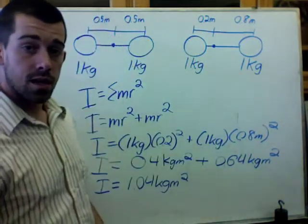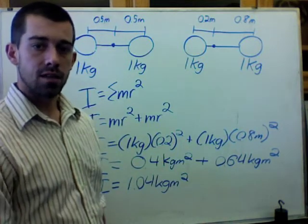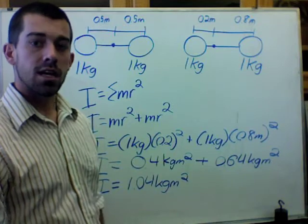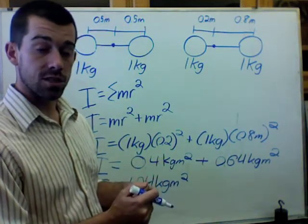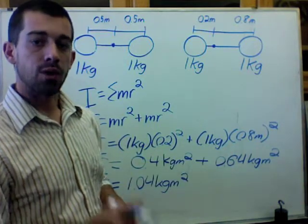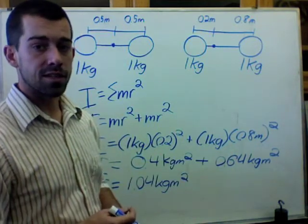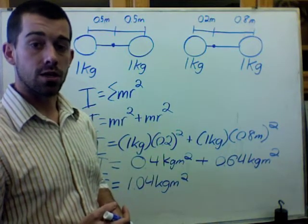So notice that not only is it important how much mass something has when solving for its rotational inertia, it also matters where the center of rotation is and how far those masses are from the center of rotation. I want to give you one more brief example of the kinds of things you'll see related to rotational inertia on the AP test.